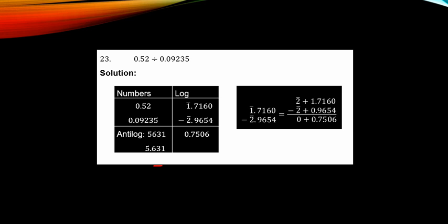The next example is on division. The first number is 0.52, so the characteristic is minus 1, written as bar 1. From your logarithmic table, you check 52 under 0, because there is no other digit after 2. That gives mantissa 7160.